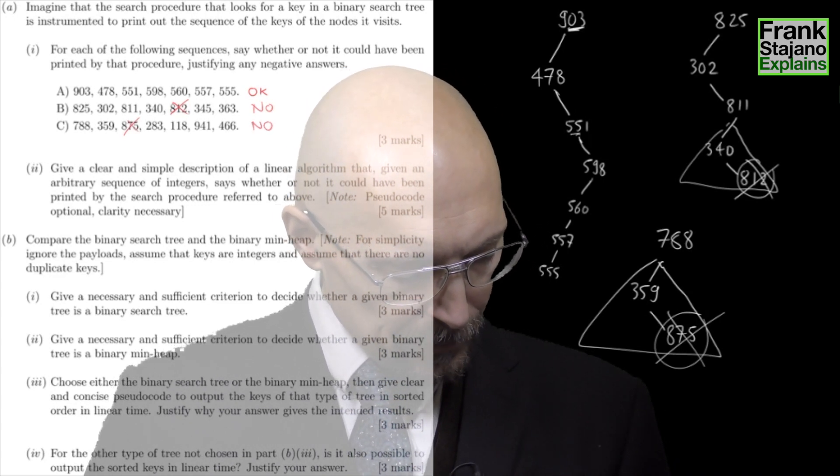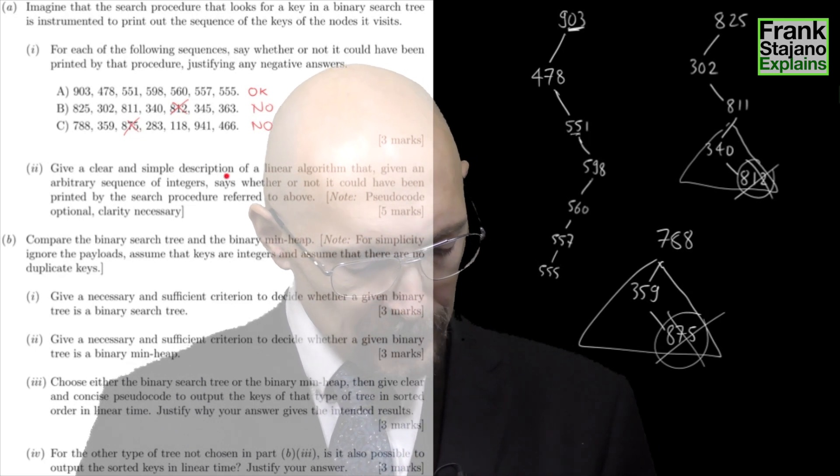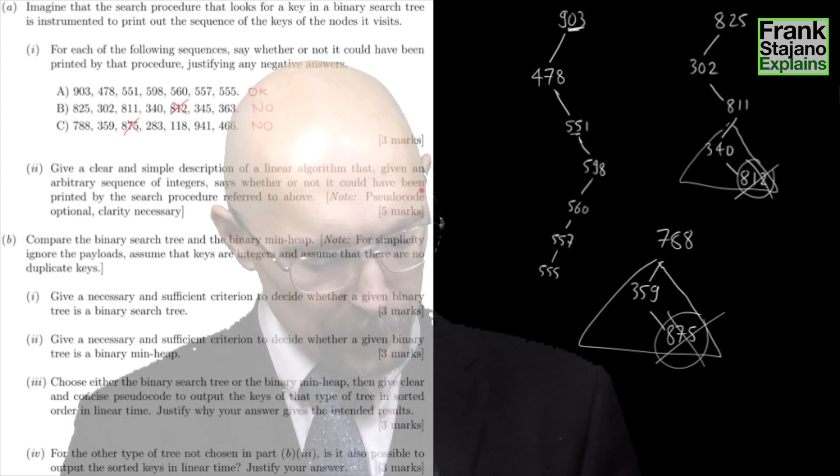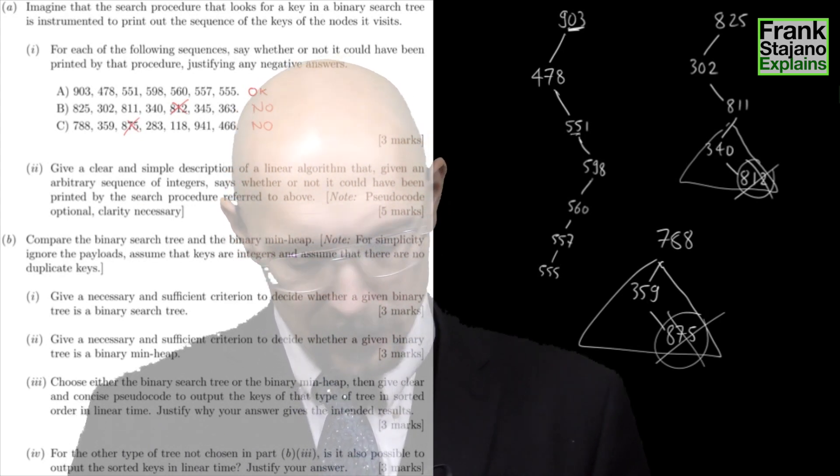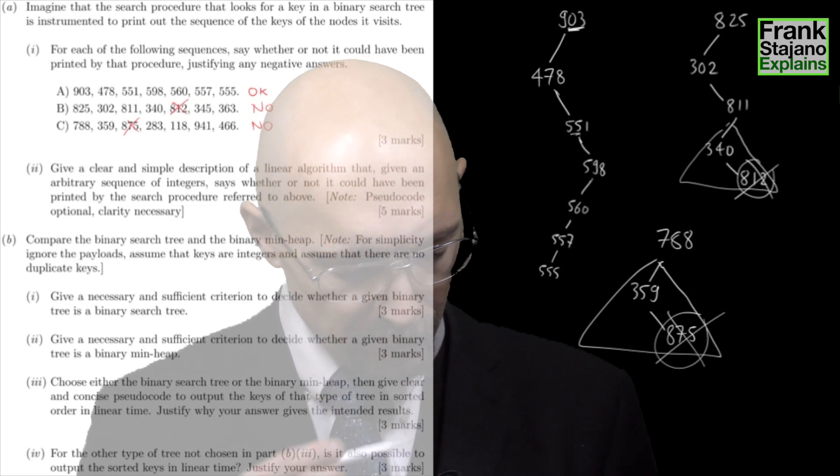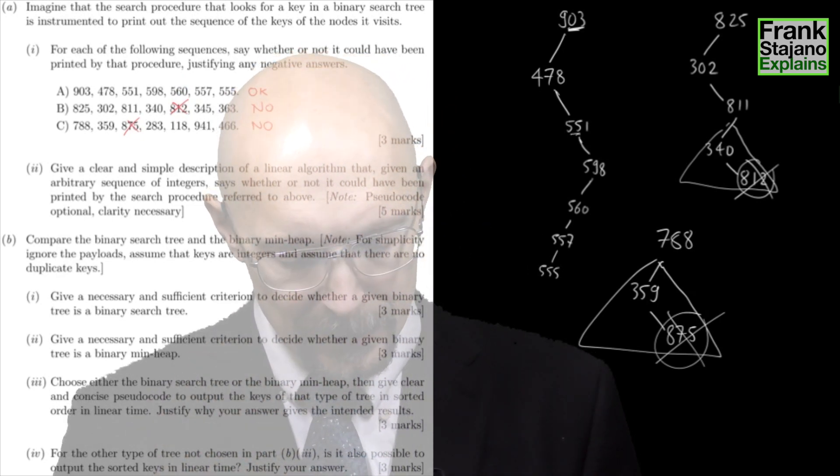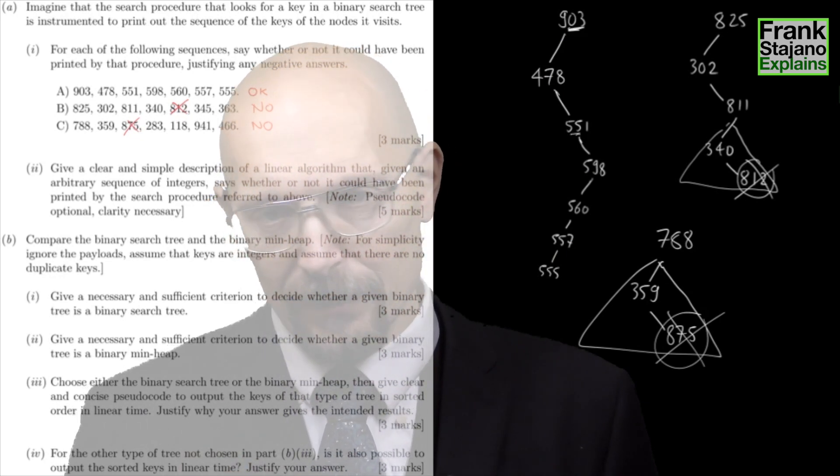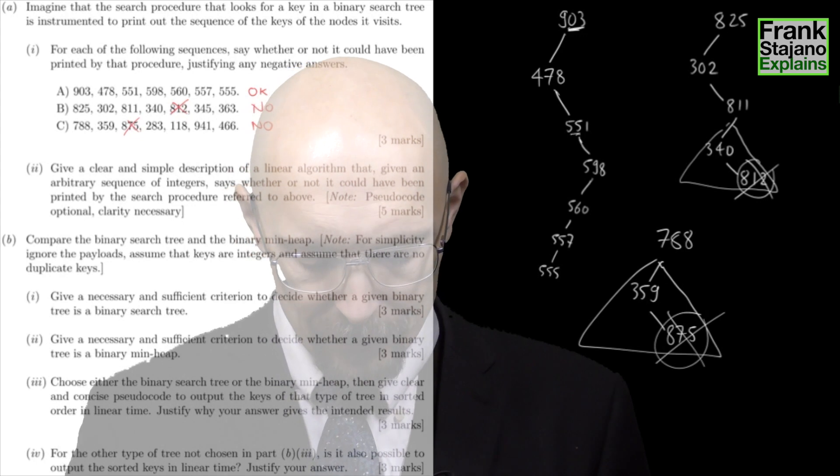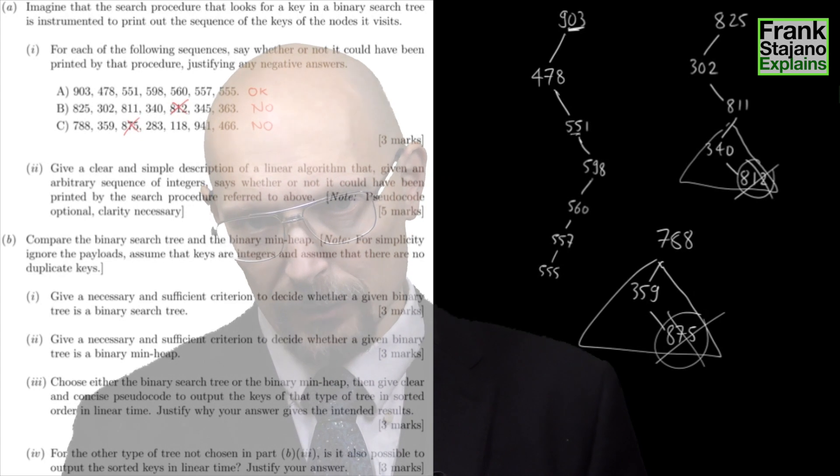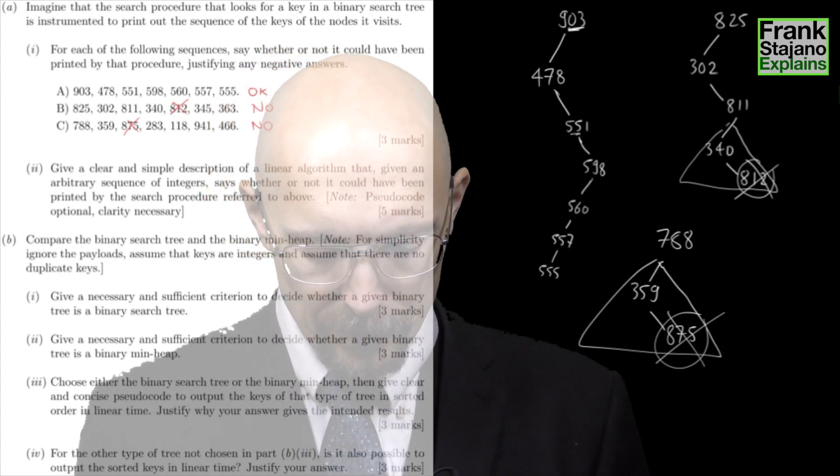Next, give a clear and simple description of a linear algorithm that, given an arbitrary sequence of integers, says whether or not it could have been printed by the search procedure. So I can just explain what I did previously. The issue is whenever I do the check that we are still within the left subtree or whatever, do I have to check all the previous things? Because if I do, then it's going to be a quadratic algorithm, not a linear algorithm.